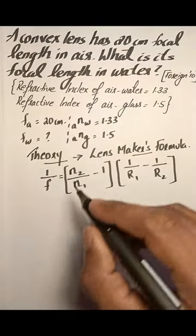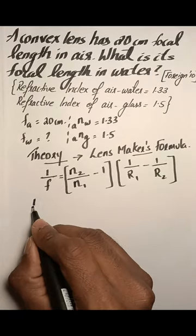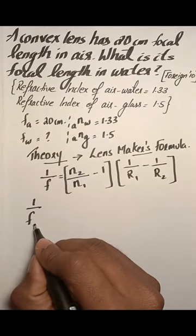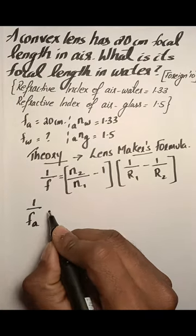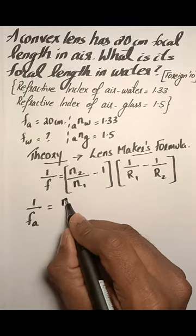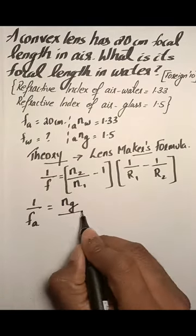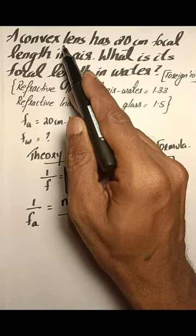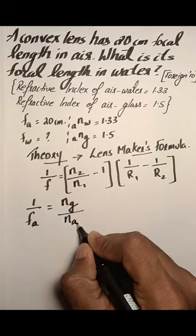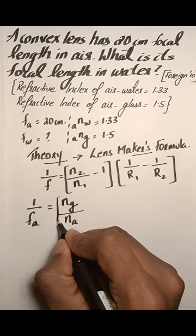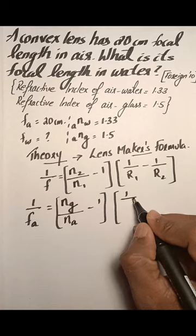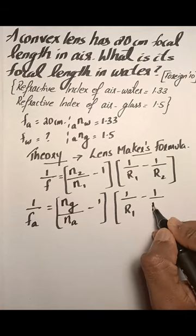We will apply the given values to the formula. For the focal length of the glass lens in air, let it be F_A. The refractive index of the lens is n_G divided by the refractive index of air, minus 1, multiplied by 1 over R1 minus 1 over R2. This is equation 1.